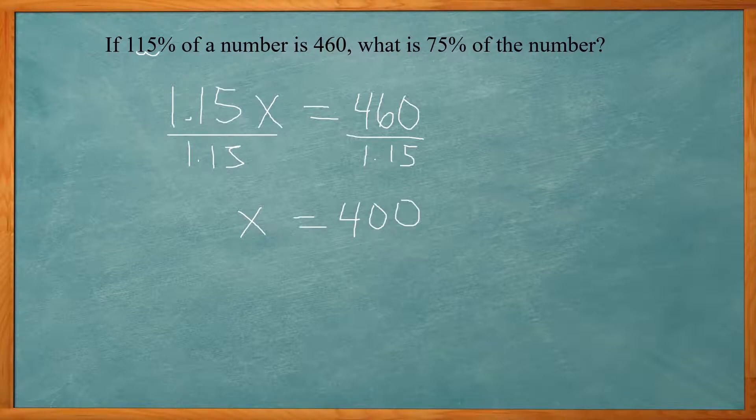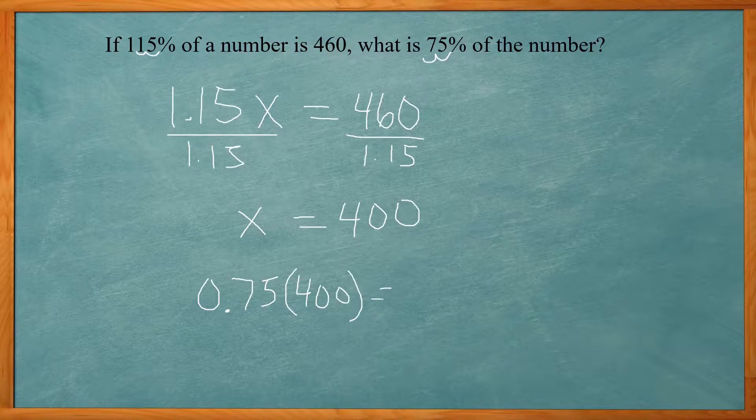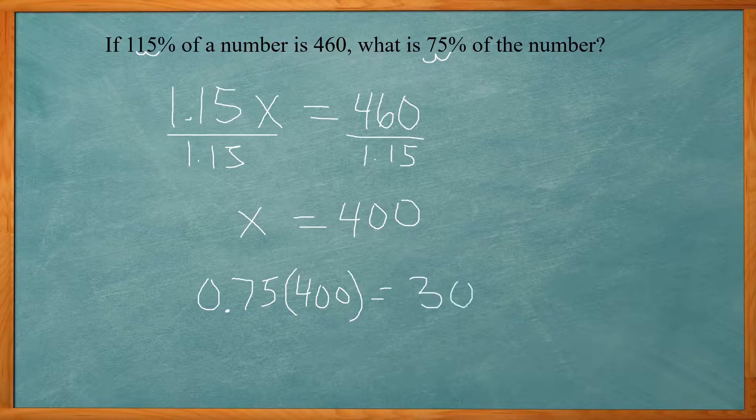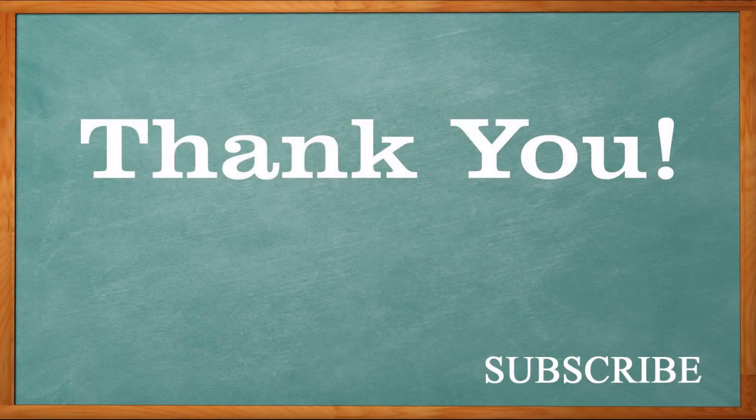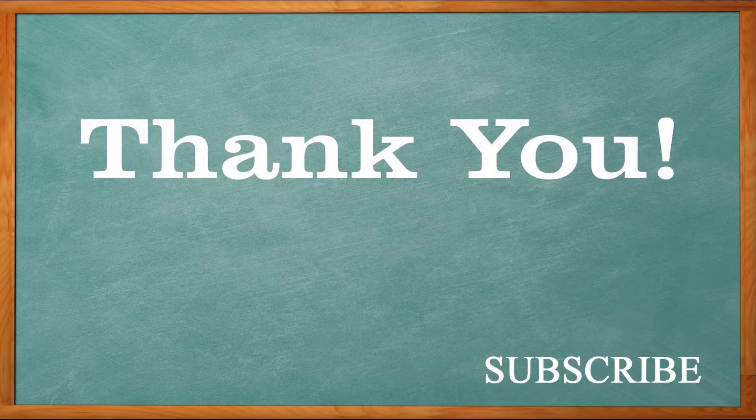Now I want to find 75% of that number. So again, move it over two places to get 0.75, and then multiply by the other number, 400. That's going to give you 300. And that's it.